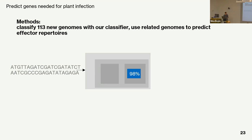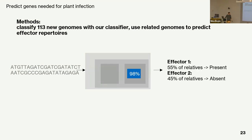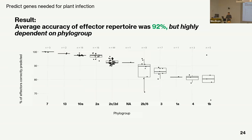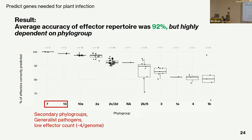I took 113 new genomes not in my training dataset, fed them through the classifiers, and looked at what effectors their classified cluster neighbors had. If more than 50% of genomes in a cluster had a certain effector protein, I predicted the unknown had it too. I looked at 77 effectors. Overall results showed 92% accuracy in effector repertoire prediction, but this varies dramatically by phylogroup. The best-performing were phylogroups 7 and 13 — secondary phylogroups carrying 4–5 effector proteins with stable, small repertoires.